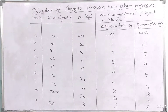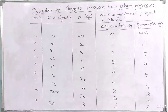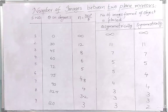If the position of the object is symmetrical with respect to the two plane mirrors, we always do 360/theta minus 1, even if the result is odd. So when the object is symmetrical with respect to the two plane mirrors, we must do minus 1 regardless.